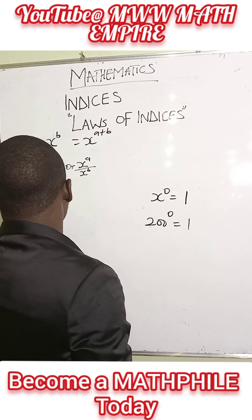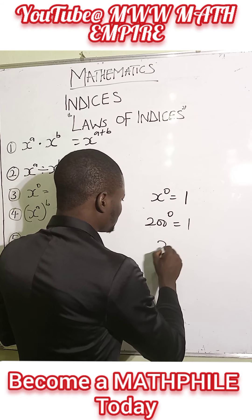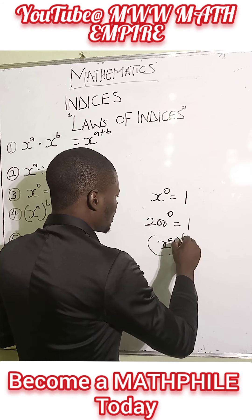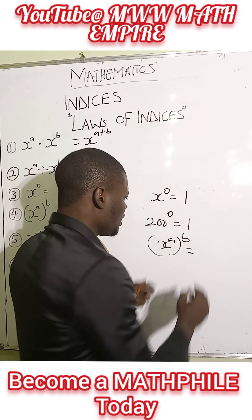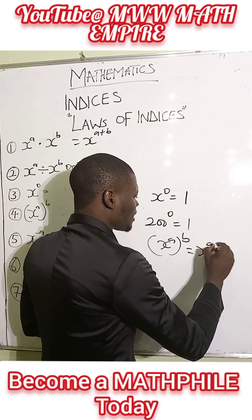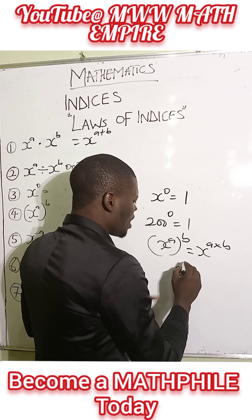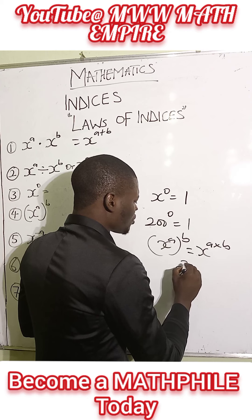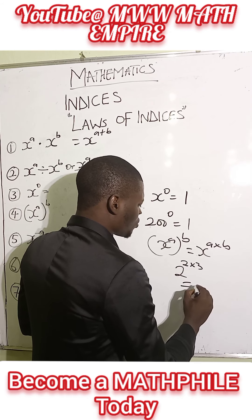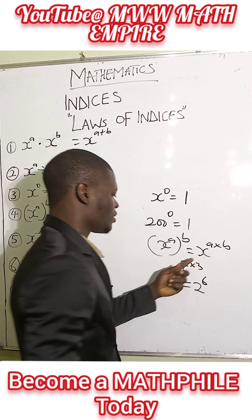Now we have x raised to the power of a and b — that is, a power raised to another power. This implies x raised to the power of a times b. Take for instance, we have 2 raised to the power of 2, and that whole thing raised to the power of 3. This also means 2 raised to the power of 6.